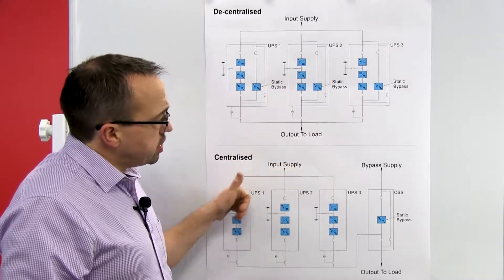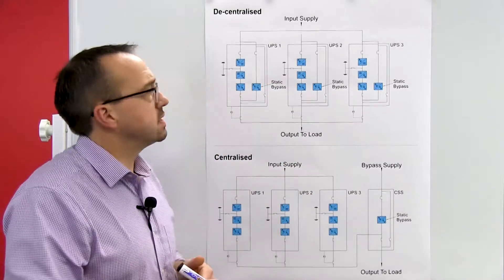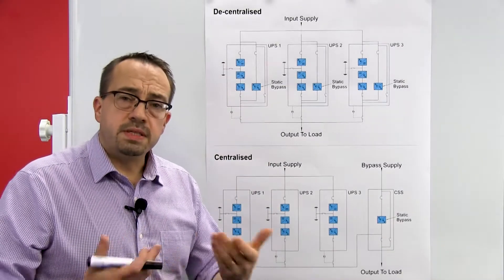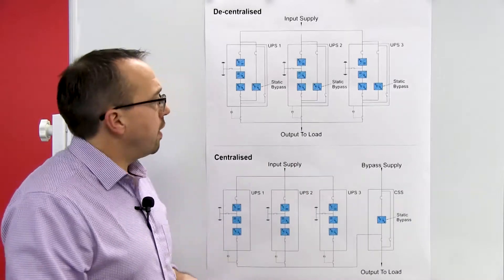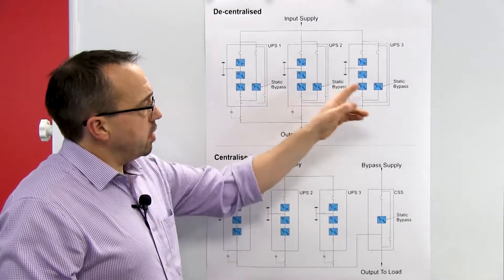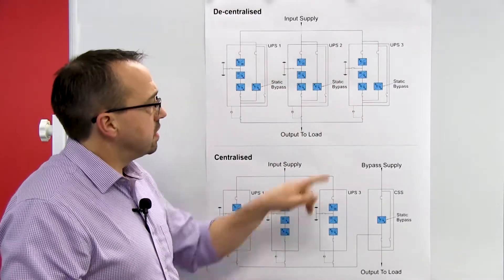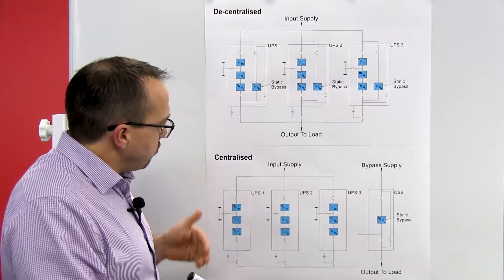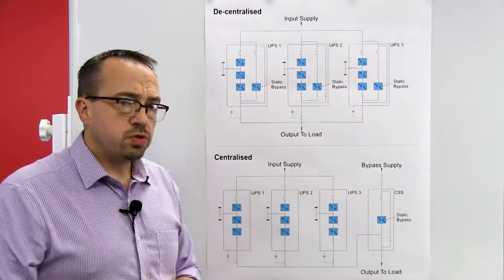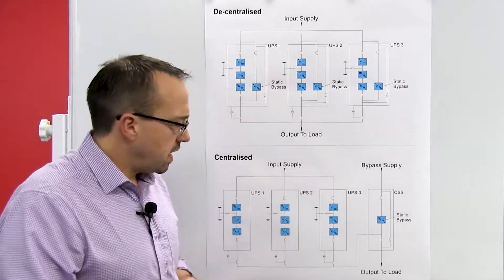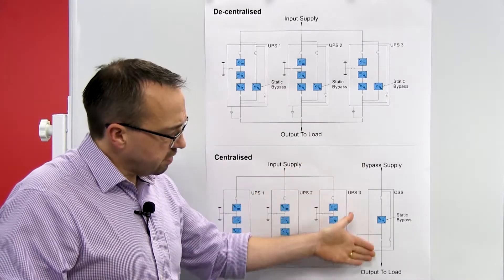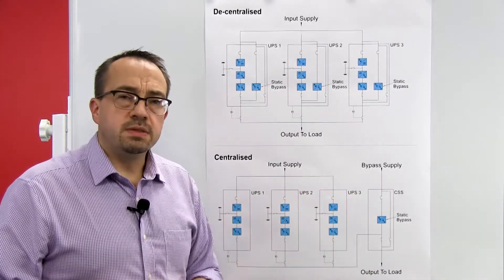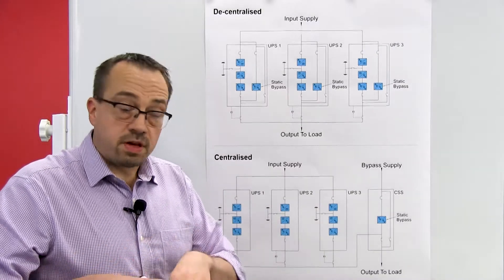In addition to operational resilience, you must consider maintenance resilience. In the decentralized system, if you need to maintain a UPS you simply power it down, carry out maintenance, and power it back on — the remaining operational modules still support the critical load and provide static bypass availability at all times. With the centralized system you can maintain the UPS modules without issue, however when you need to maintain the static bypass module you are removing bypass availability from the entire UPS system, reducing the resilience level during that maintenance period.